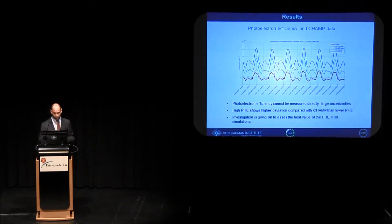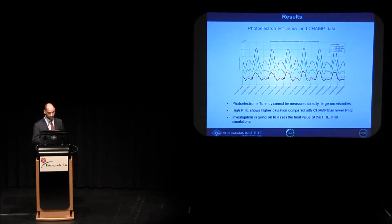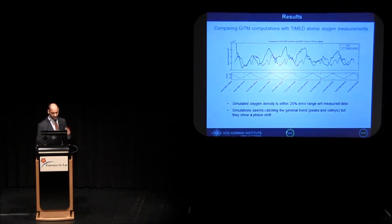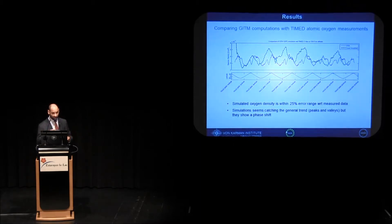We tried to change the input boundary conditions to GITM — for example, the photoelectron efficiency, which cannot be directly measured. We varied the photoelectron efficiency to tune GITM against CHAMP data and confirmed it has an effect. We also compared GITM with TIMED atomic oxygen measurements. The simulated atomic oxygen by GITM is within 25% of the TIMED satellite measurement data, which is pretty good. The simulation catches the general pattern of valleys and peaks, but there is a phase shift we are currently investigating.